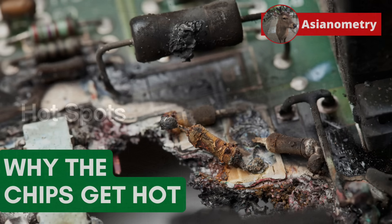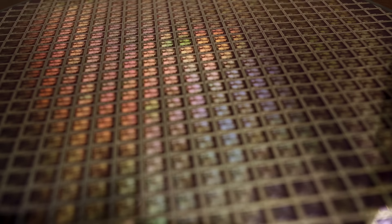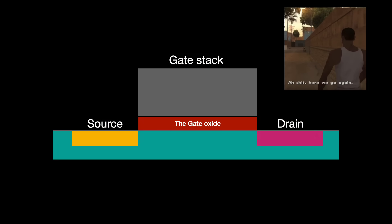Heat inside the transistor begins with hot spots. Whenever the transistor is using power, power is also being dissipated. And whenever power is being dissipated, we are also generating heat. Let us switch on a plain planar transistor — a classic one. It has a source, drain, and a gate stack, which itself consists of a metal gate and a thin layer of oxide called the gate oxide.